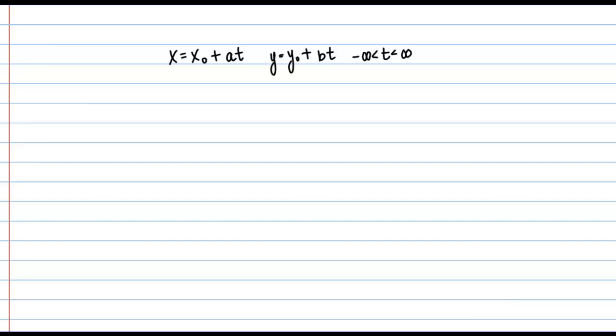Let's say we have parametric equations of this form: X equals X₀ plus AT and Y equals Y₀ plus BT, for T between negative infinity and infinity. In this video, we're going to figure out the shape graphed by these parametric equations.